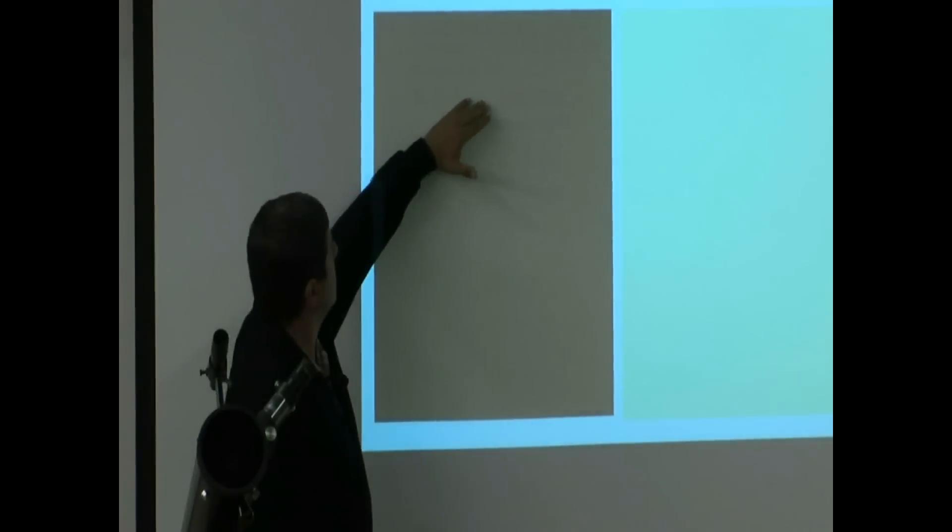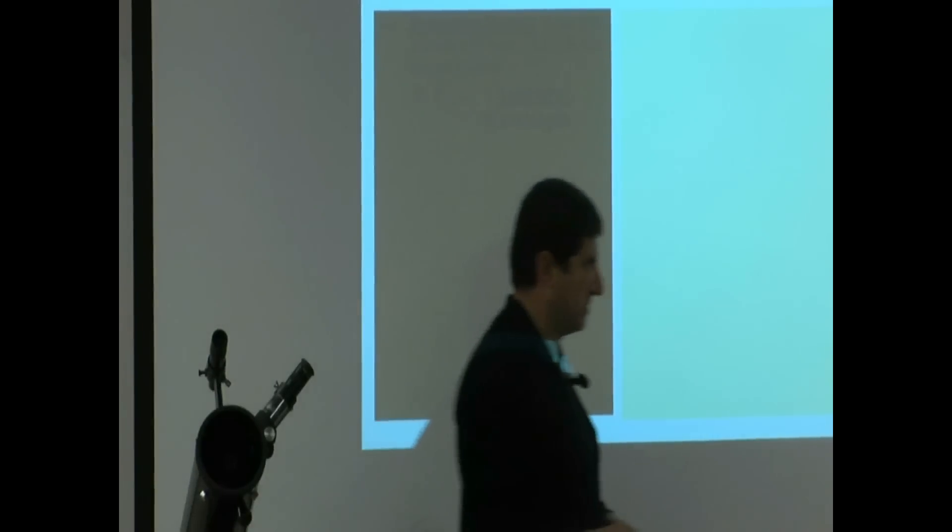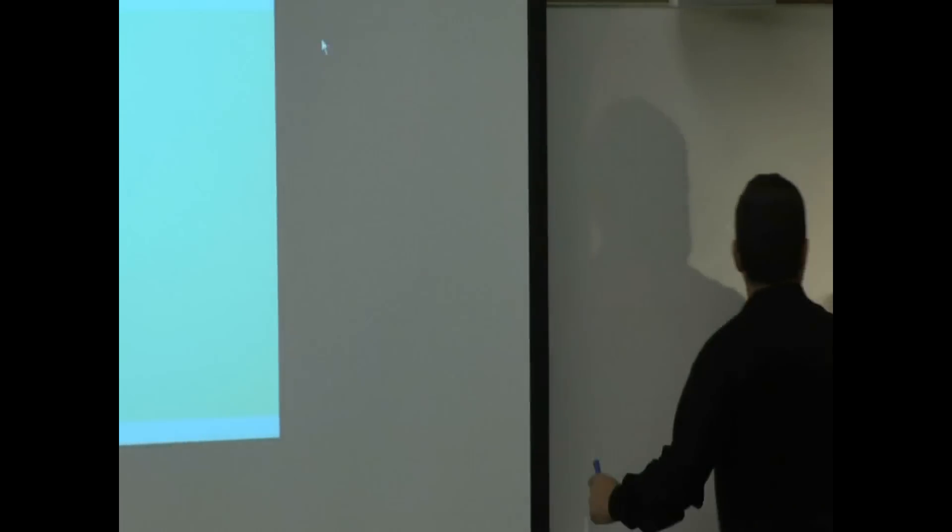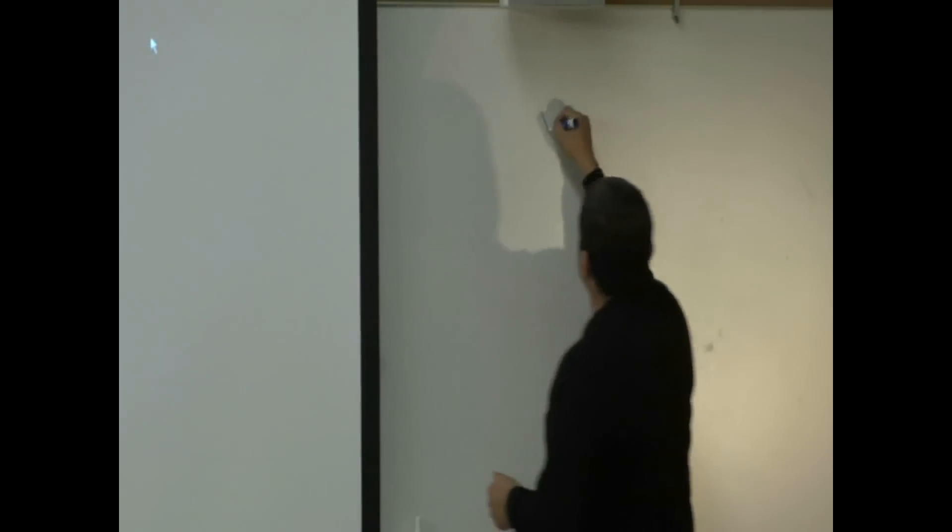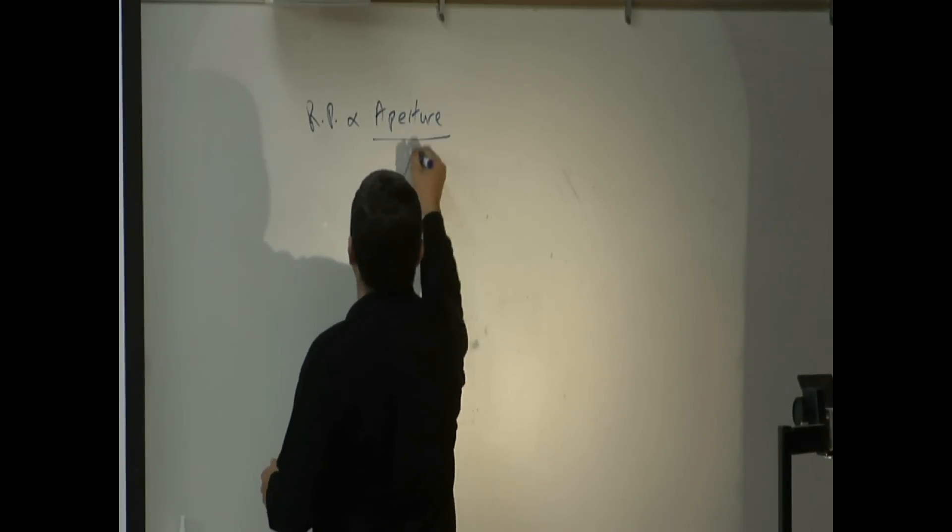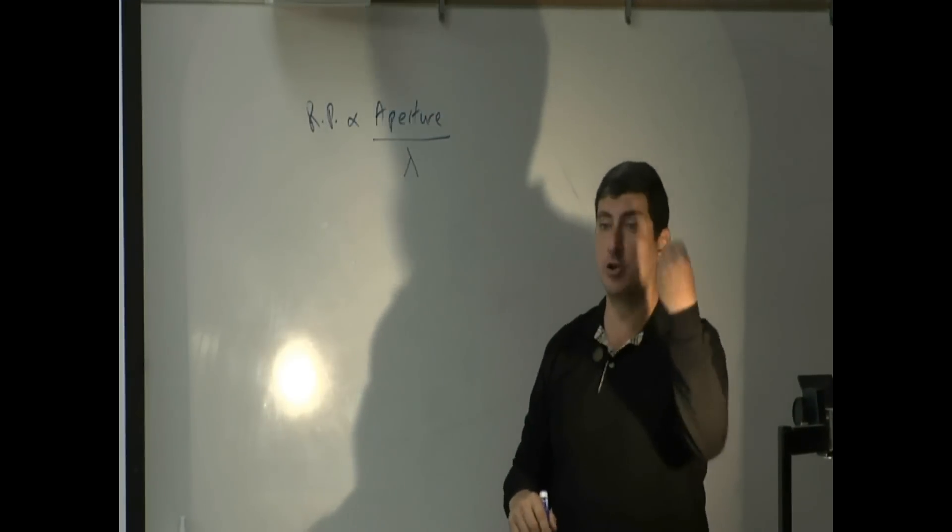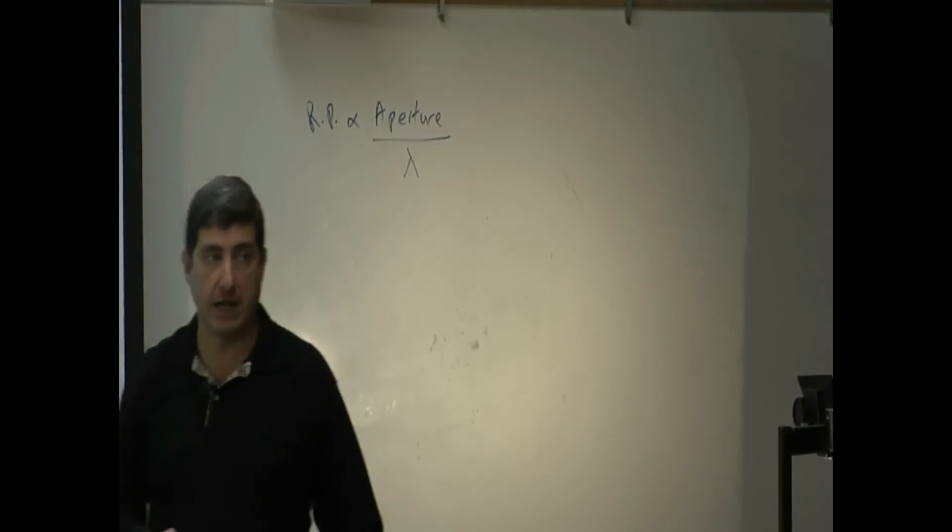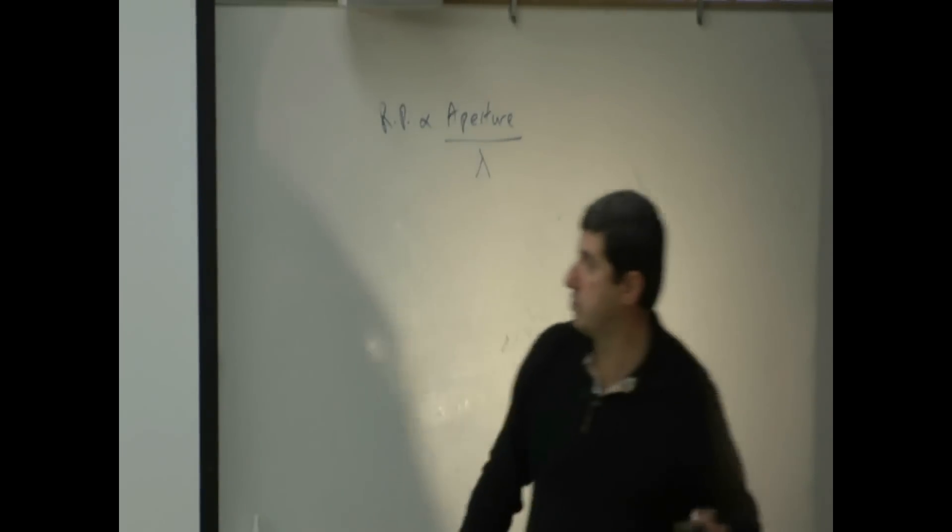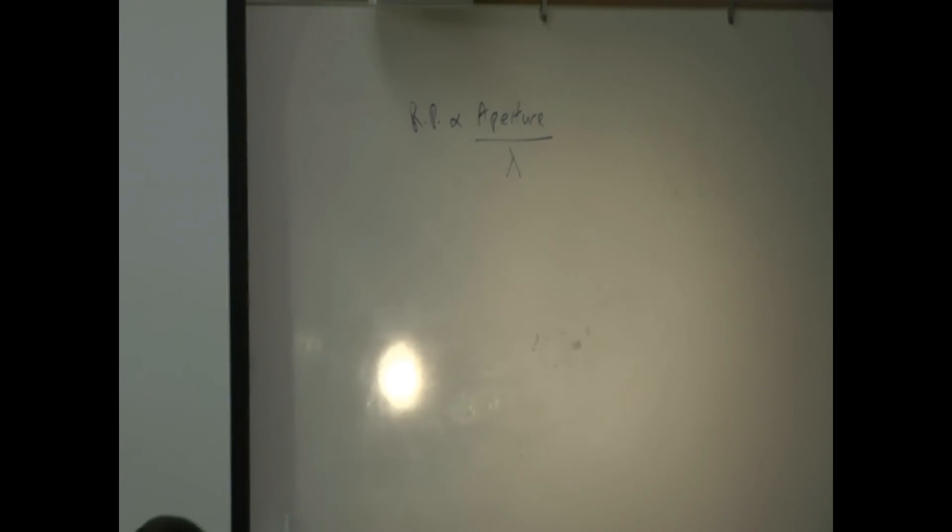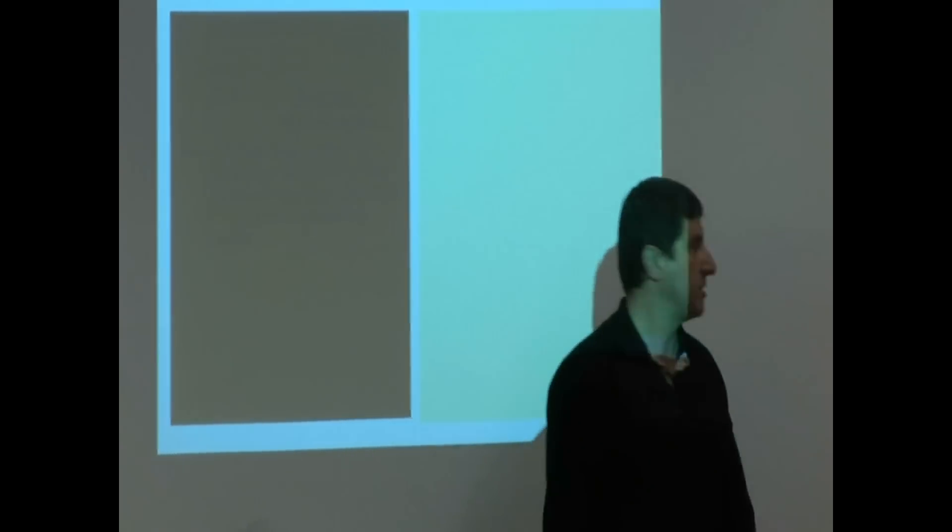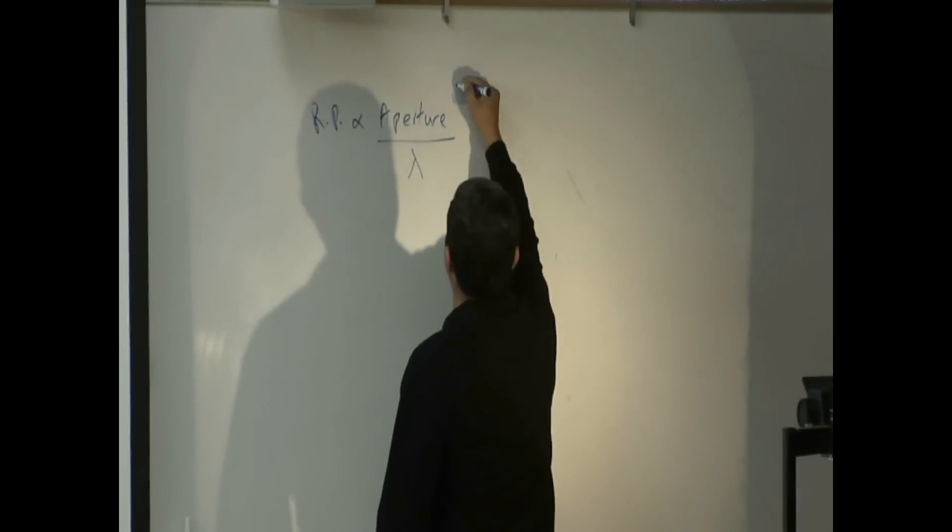So resolving power, the resolving power is proportional to aperture over wavelength. So the way that this works, resolving power is proportional to aperture over what wavelength you are observing, what wavelength you are looking at. So does making the aperture bigger help the resolution as well as the brightness? Oh, yeah. So if you double the aperture, the clarity of the picture doubles. If you triple the aperture, the clarity triples. So basically this one doesn't have a square.